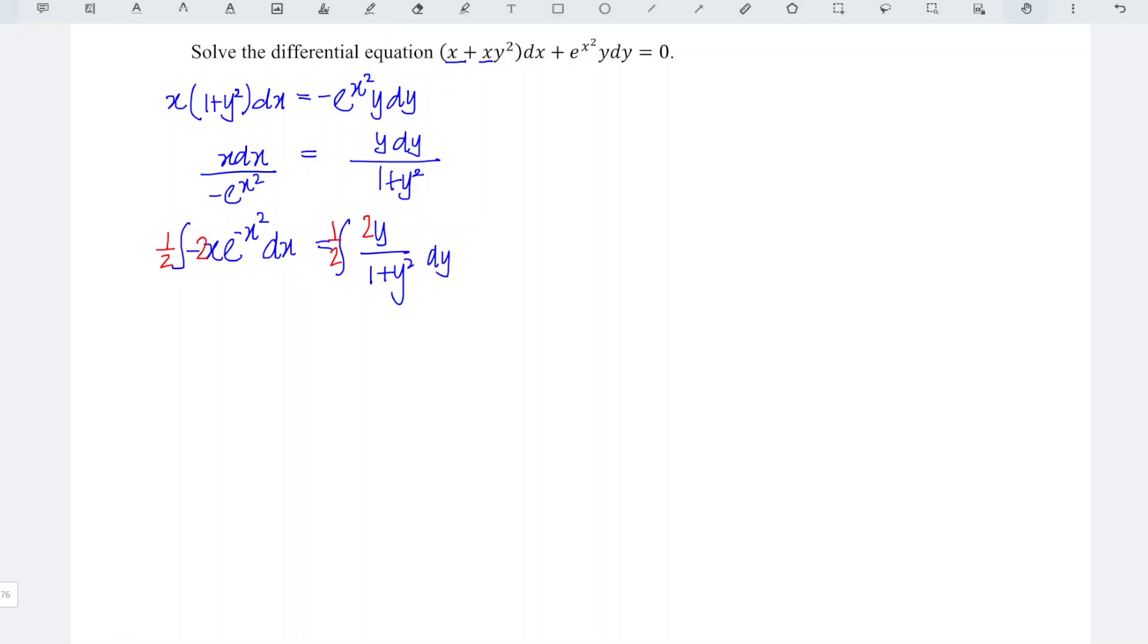So which means that we just have to simply integrate negative 2x e^(-x²)dx is equal to integrate 2y over 1 plus y square dy. When we integrate this, since this is already the standard form, so which means that we have the exponential function.